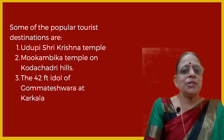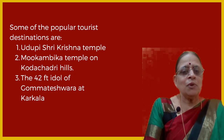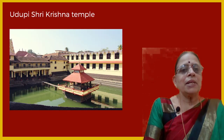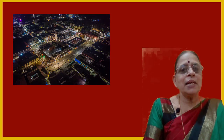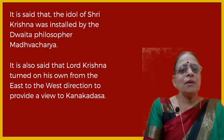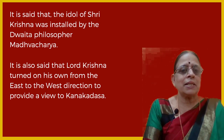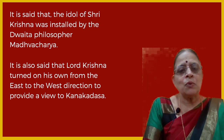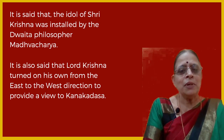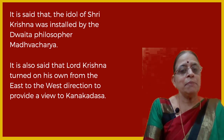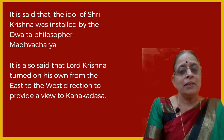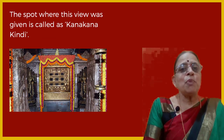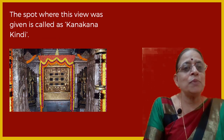Some popular tourist destinations are the Udupi Shri Krishna temple, Mukambika temple on Kodachadri hill, and the 42-feet idol of Gomateshwara at Karkala. It is said the idol of Shri Krishna was installed by the Dvaitha philosopher Madhvacharya. It is also said that Lord Krishna turned on his own from east to west to provide a darshan to Kanakadasa, who prayed outside with devotion after being denied entry. The spot is called Kanakana Kindi, and even today visitors take darshan of Krishna through Kanakana Kindi.